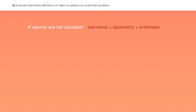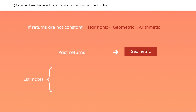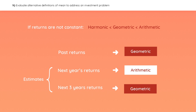When it comes to investment problems, if you are calculating past investment returns, use the geometric mean. If you are estimating a single-period return, such as next year's return, use the arithmetic mean. And if you are estimating multi-period returns, such as the returns over the next three years, use the geometric mean.